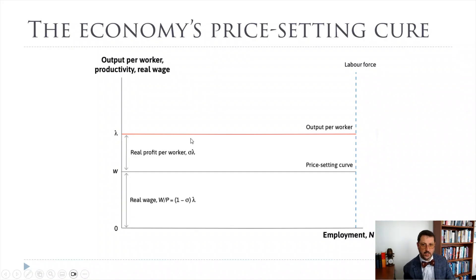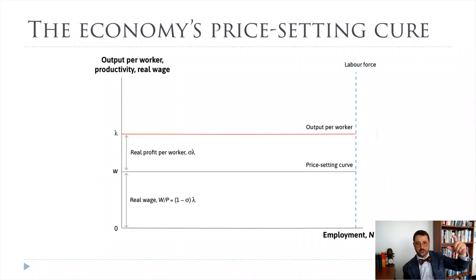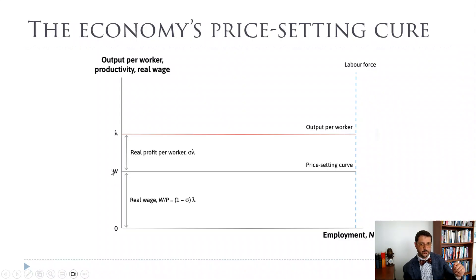Let's do an example. Workers are producing $100 of value every hour, and firms are getting 20% of that — so sigma is 0.2. Lambda equals 100. Sigma times lambda is 0.2 times 100, which equals 20. Firms are getting $20 of profit per hour. Workers are getting one minus sigma — which is one minus 0.2 or 0.8 — times lambda of 100, so they're getting $80 in terms of the wage. In this case it would be $100 for lambda and $80 for the real wage.